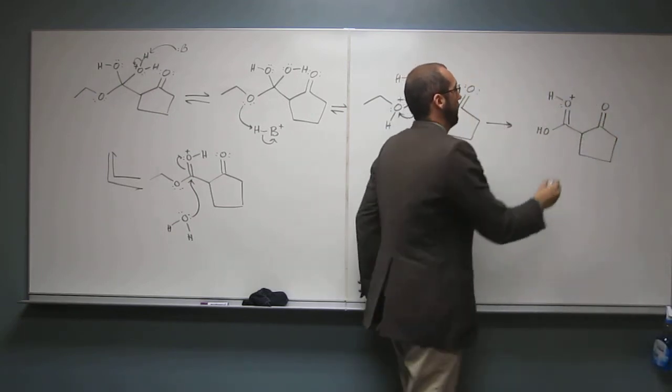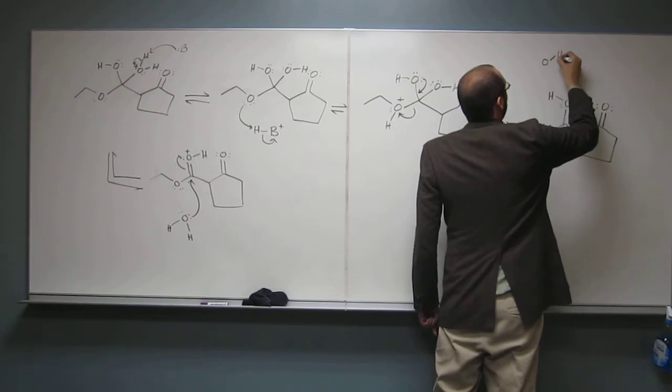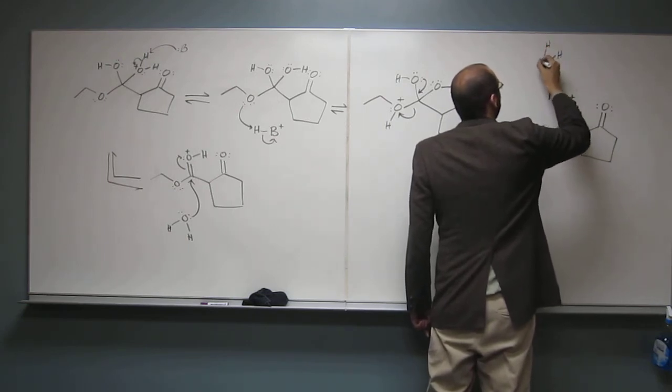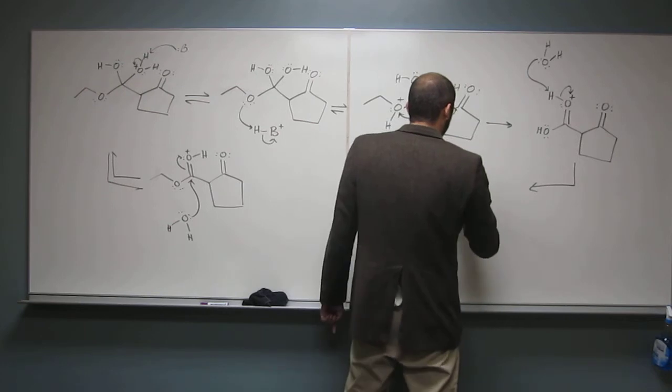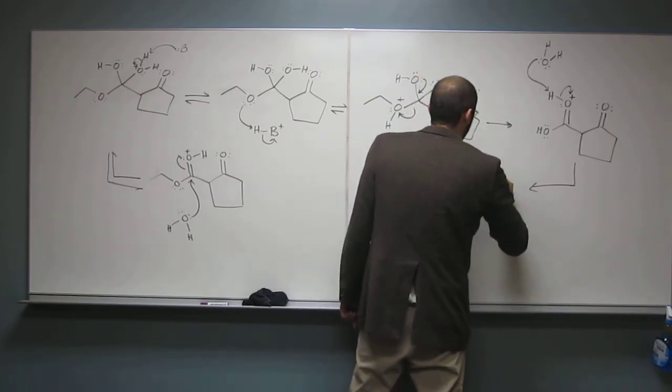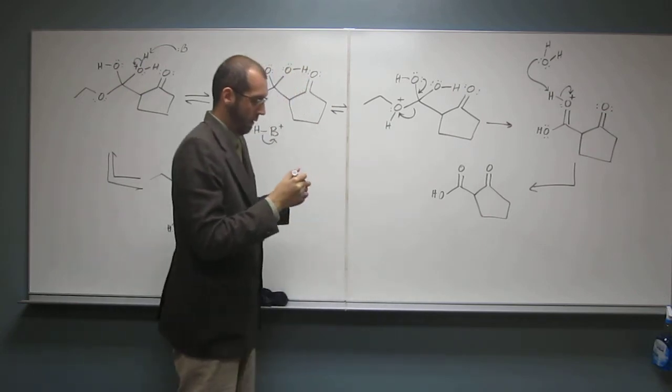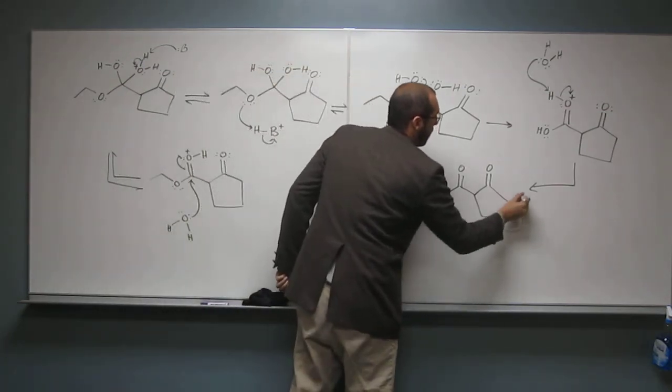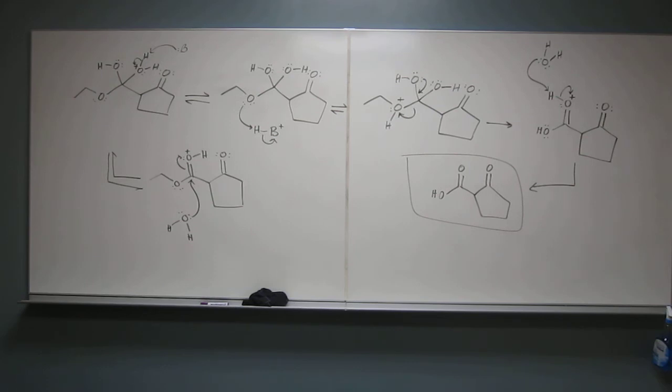And now you've got this intermediate. We've still got water or some other base in there. And that's going to deprotonate, giving us the final product, which is the Dieckmann condensation product, the beta keto acid. Any questions on that one? No questions. A lot of steps, but okay.